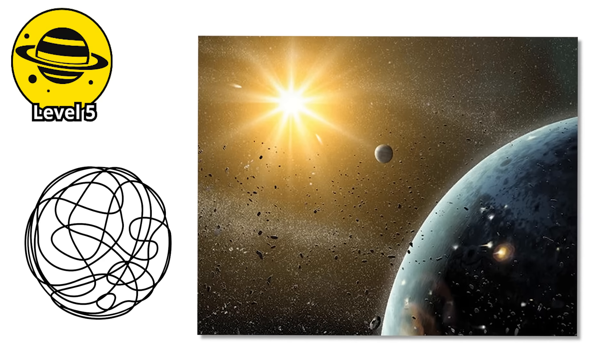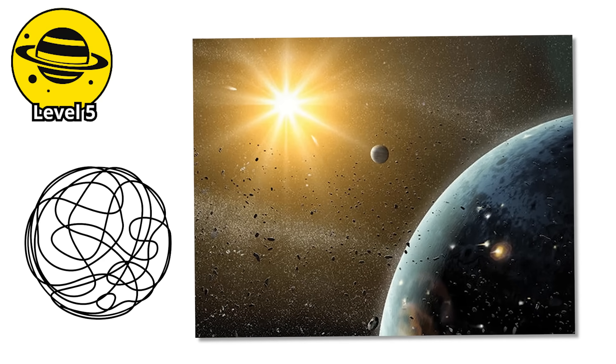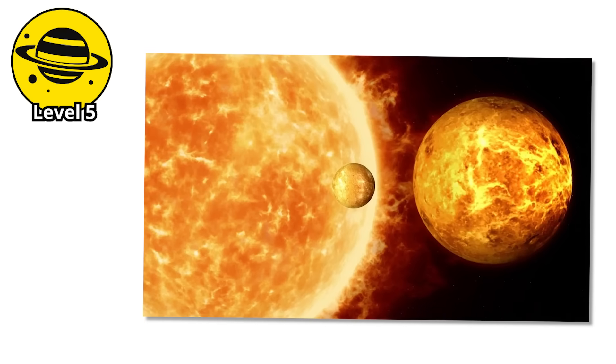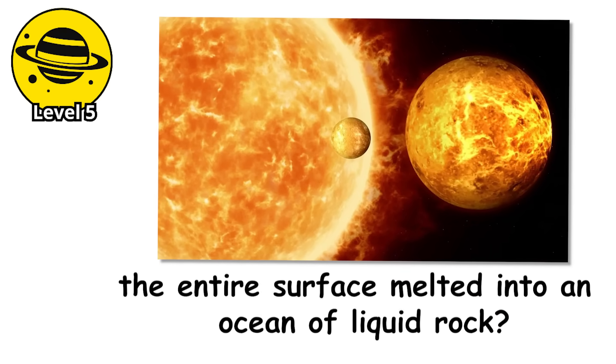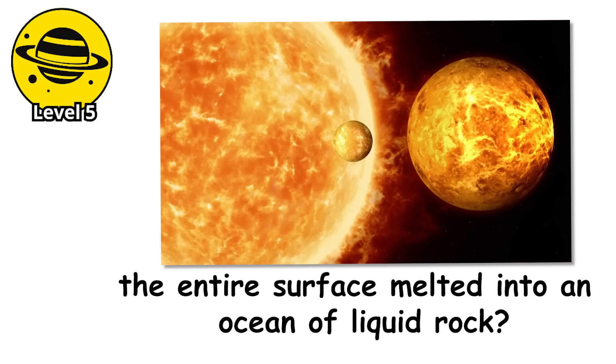Gas giants are massive and chaotic, but at least they maintain some distance from their stars. But what if a planet got so close to its sun that the entire surface melted into an ocean of liquid rock?